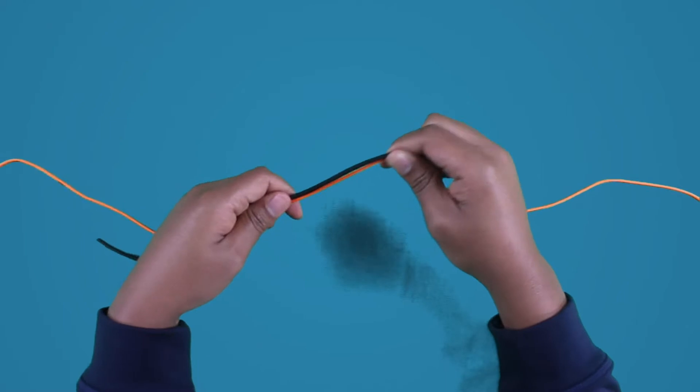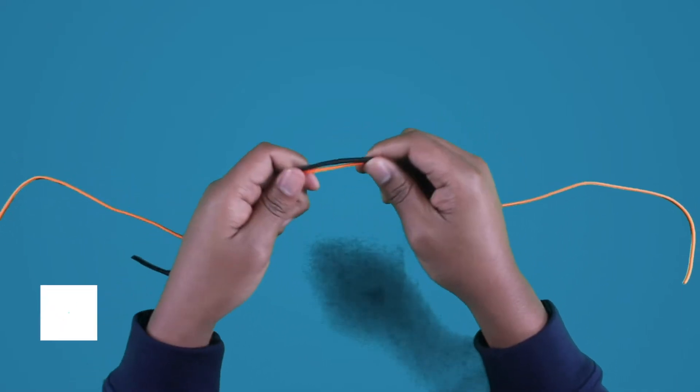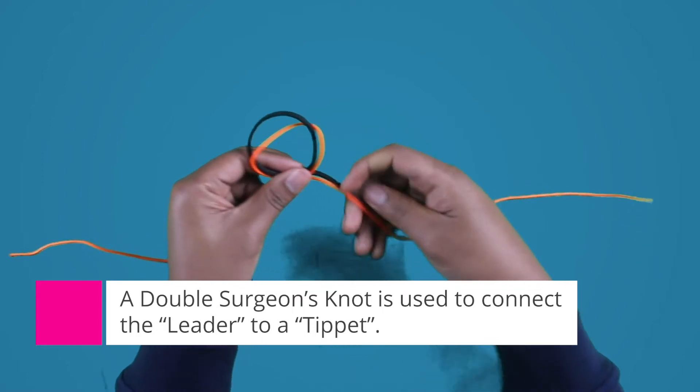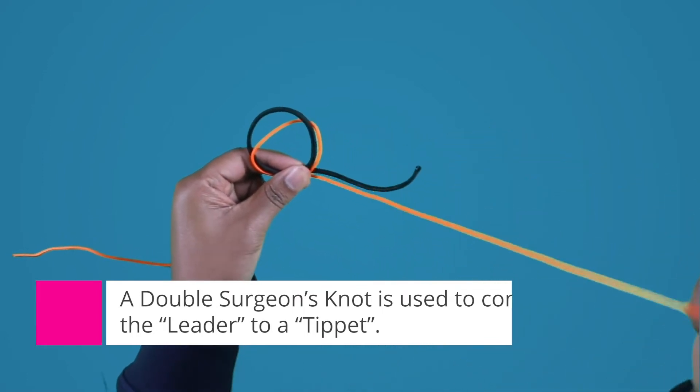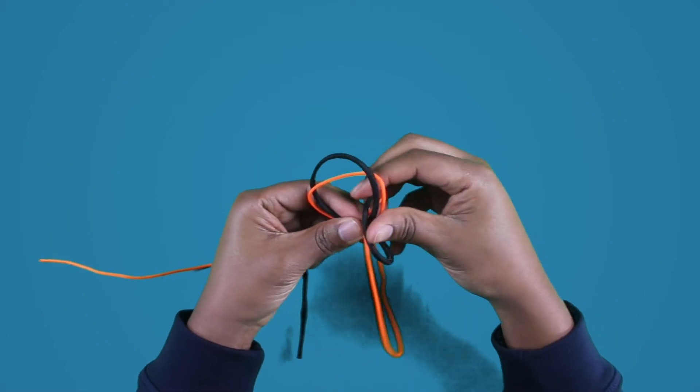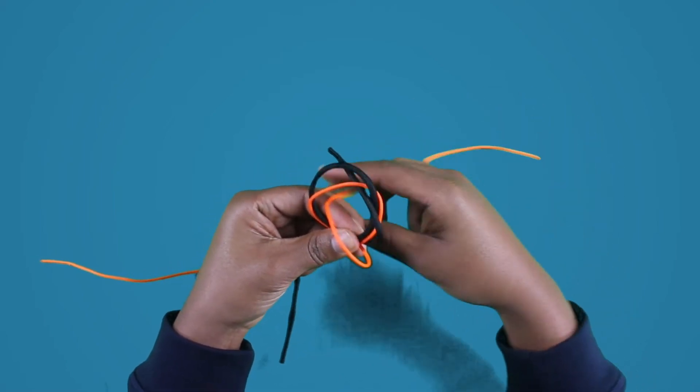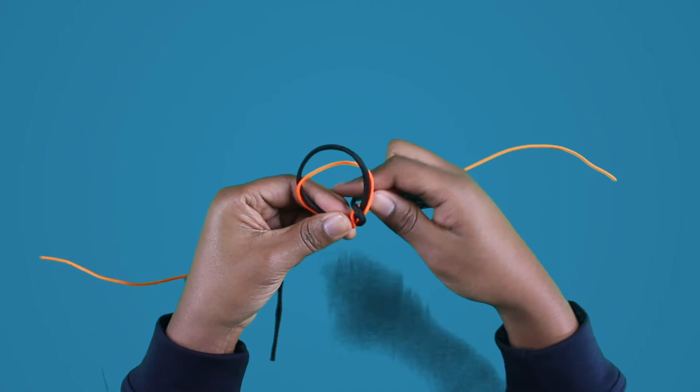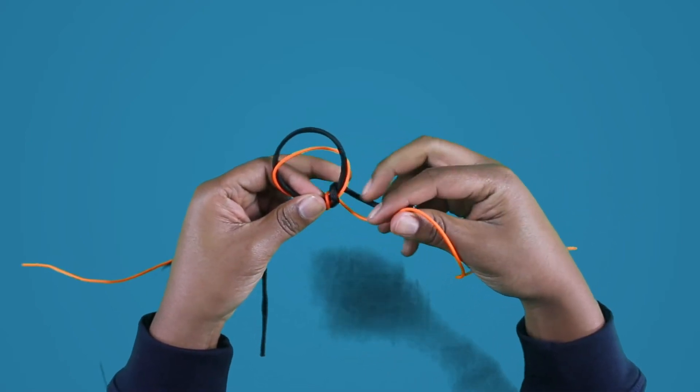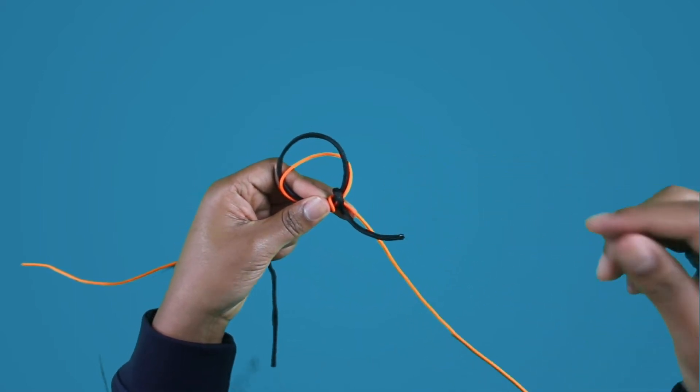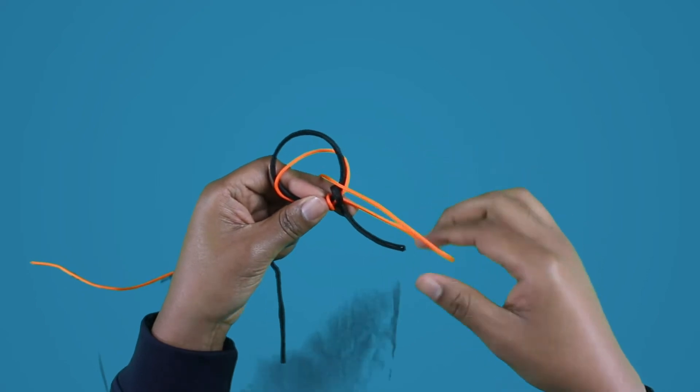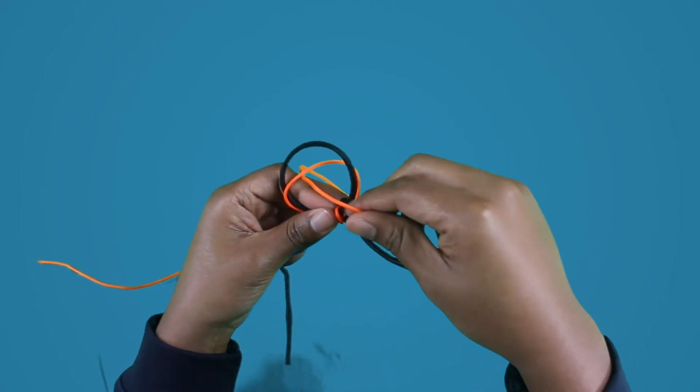Tie a basic overhand knot with both materials together. And then once you have done that, do it one more time. So it is a double overhand knot. All the lines wrapped around again.